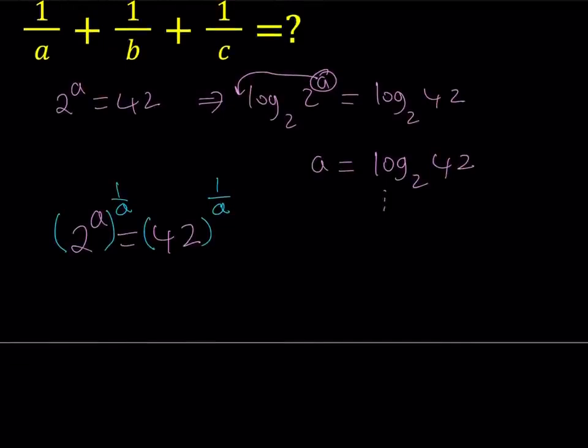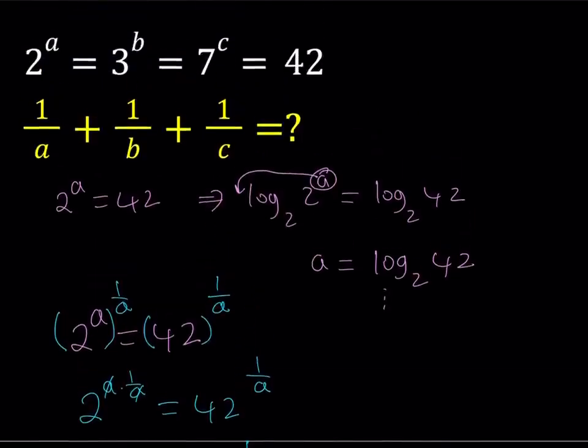So from here, power over power rule, we're going to multiply the powers. That's going to give me 2 to the power A times 1 over A, which becomes 2 to the power 1. And on the right-hand side, I'll be getting something like this. So this basically means that 2 equals 42 to the power 1 over A.